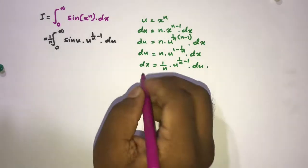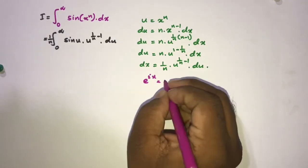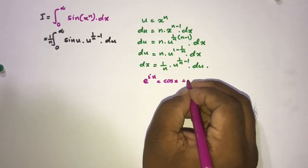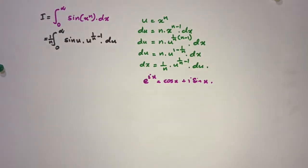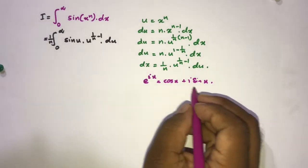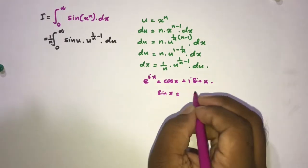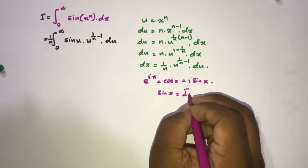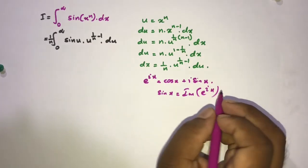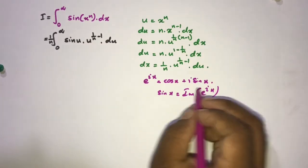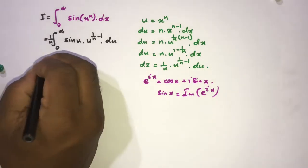We use the formula e to the ix equals cosine of x plus i times sine of x. From this we know that sine of x is equal to the imaginary part of e to the ix.